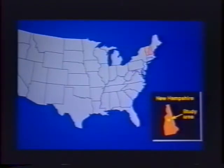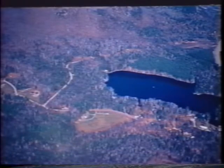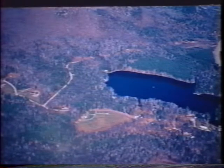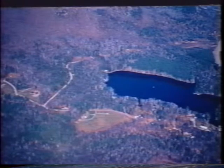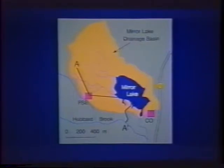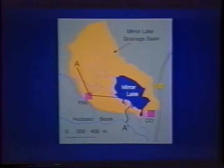The Mirror Lake site is in New Hampshire, just at the southern end of the White Mountains. Here's an aerial photograph of the site. Mirror Lake is here, and Highway I-93 going towards Canada runs through the area. The drainage basin right around Mirror Lake includes streams that drain down into the lake. One of our well fields is in this open area, and there's another well field over here. We are within the Hubbard Brook Experimental Forest, run by the U.S. Forest Service and devoted to ecosystems and forest hydrology research, where lots of studies have been done.